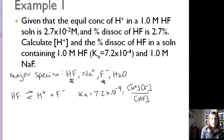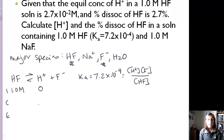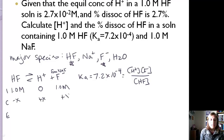Setting up our ICE table: initially we have 1 M hydrofluoric acid, no H+, but we start with 1 M fluoride because it comes from the salt which completely dissociates — this is what's different from problems we've done before. For the change row: −x, +x, +x. At equilibrium: 1 − x, x, and 1 + x. Plugging into the equilibrium expression gives x(1 + x) / (1 − x).